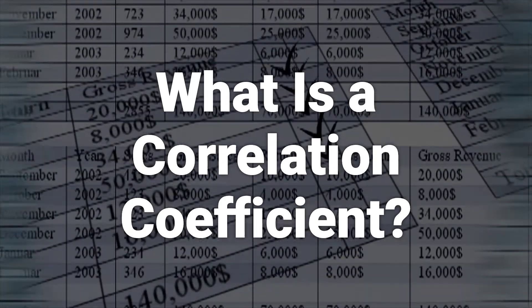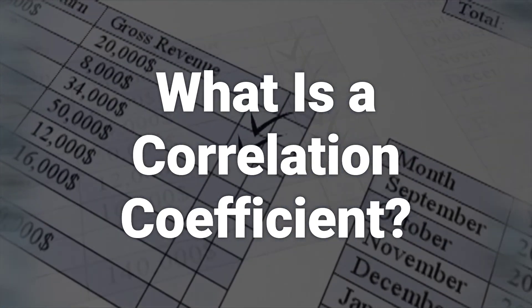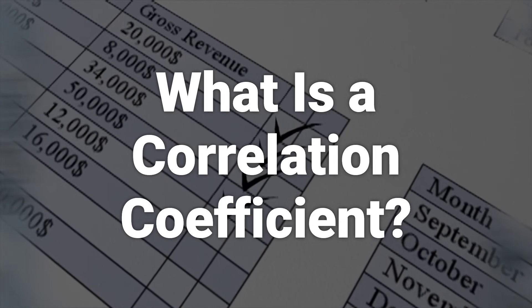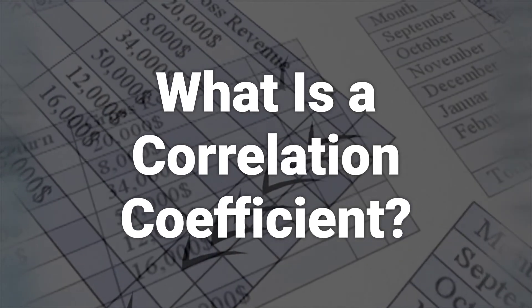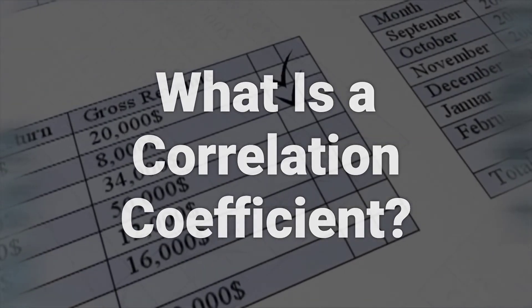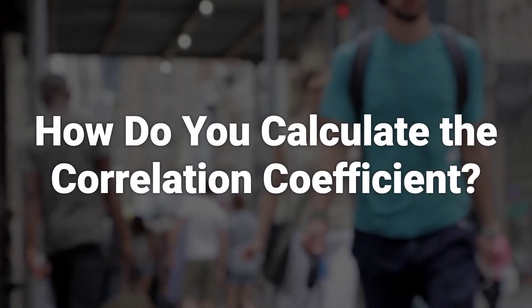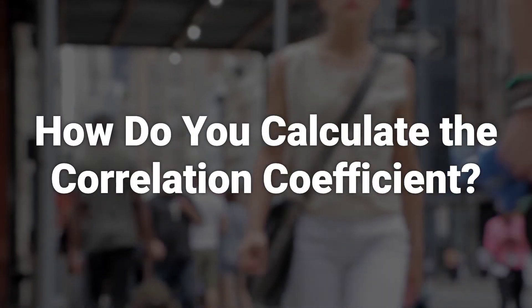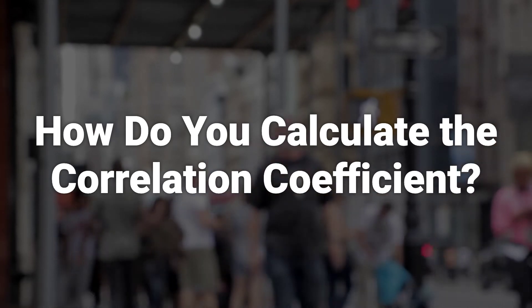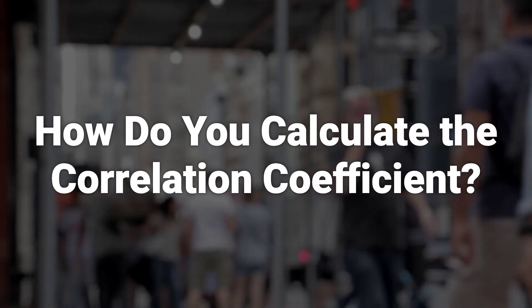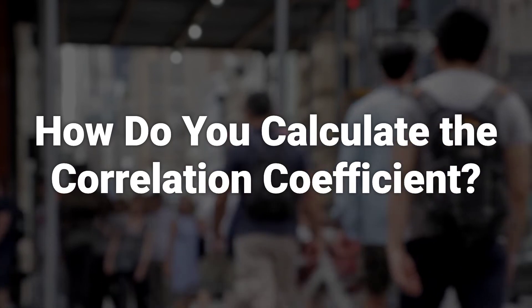The correlation coefficient describes how one variable moves in relation to another, with values ranging from minus 1 for a perfectly inverse relationship to 1 for a perfectly positive correlation. It is calculated by determining the covariance of the variables and dividing that number by the product of those variables' standard deviations.